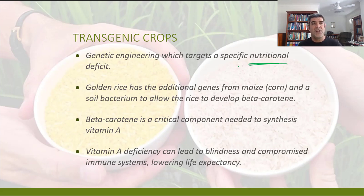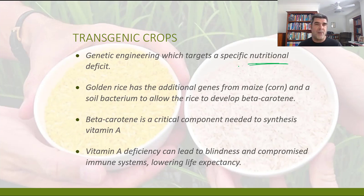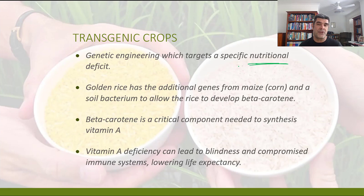Beta-carotene is very important because it allows the body to synthesize vitamin A. Vitamin A deficiency is linked to blindness and compromised immune systems, which can also lead to lower life expectancy. These are genetically modified organisms and therefore they generate often negative publicity and controversy — sometimes people protest, and there has even been destruction of crops because of strong feelings about GMOs, which is part of the history of golden rice's development. But it is one example of applying genetic engineering to specifically target a nutritional deficit.